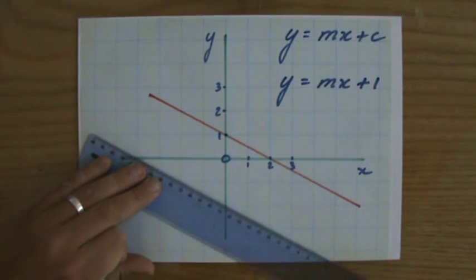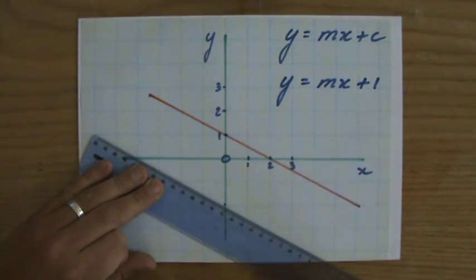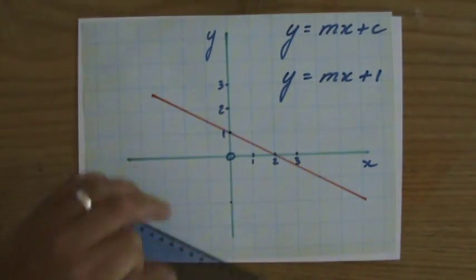Now if this line would be here, for instance, then it would be a negative 2. So where does it cross the y-axis? Well, in this particular case, at point 1.